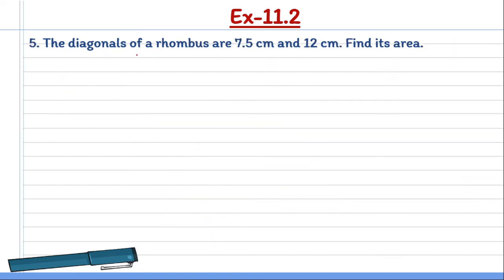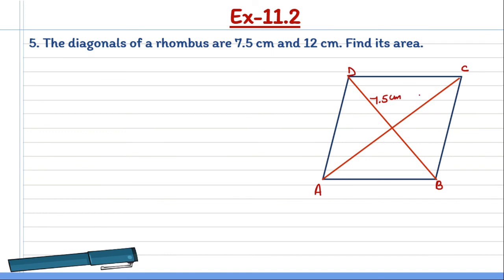Now the next question is question number 5. The diagonals of a rhombus are 7.5 cm and 12 cm. We have to find its area. Let us consider this is a rhombus ABCD. Its diagonals are 7.5 cm and 12 cm. Let us take this diagonal as 7.5 cm and this one is 12 cm. Now we have to find area of rhombus. The formula is half into diagonal 1 into diagonal 2, half into d1 into d2. So, half into 7.5 into 12, which gives 45 cm squared.